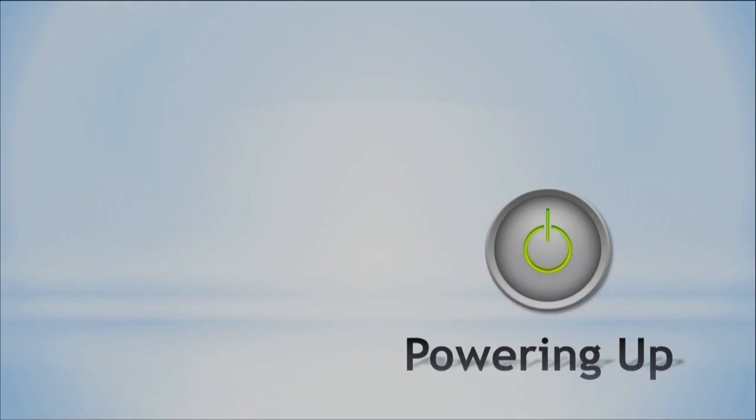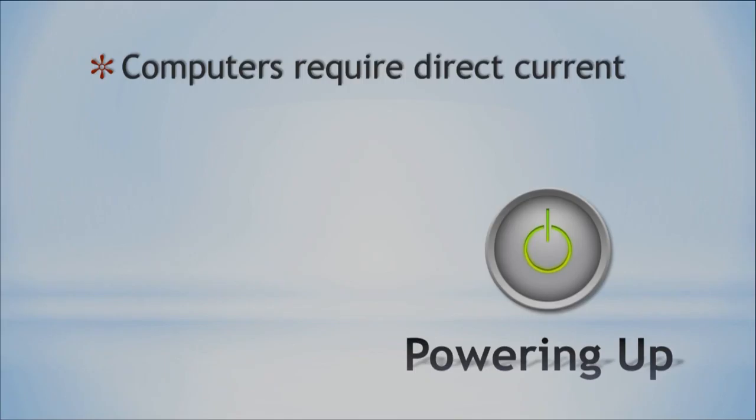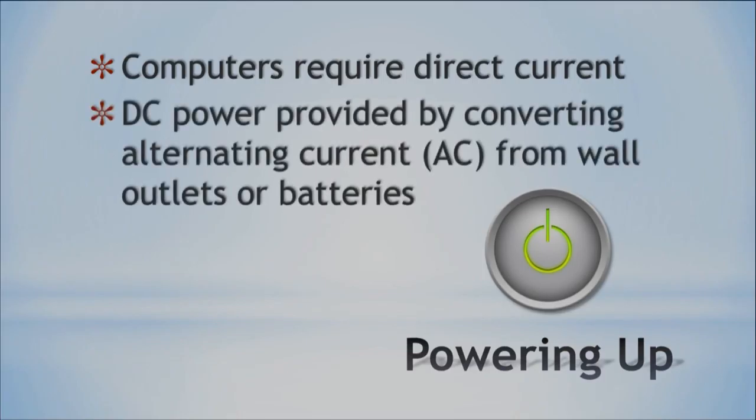We will talk about powering up. We need to know that computers actually require direct current. If you're not very familiar with direct current, AC or DC — maybe you're familiar with the band AC/DC — the DC power, or direct current, is provided when you convert the AC from the wall into DC. What that means is that when you power up, it's not just getting it directly and using it; it has to undergo a certain transformation.